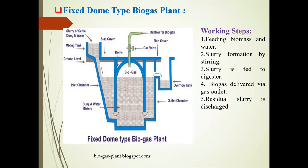Now we will see the procedure of how it works. First, we feed cattle dung and water into the mixing tank. This mixture is stored and slurry is formed, which is then fed to the digester. Here, biogas is produced and delivered through the outlet pipe. The remaining excess material, along with ore protein, is drawn out from the outlet chamber.